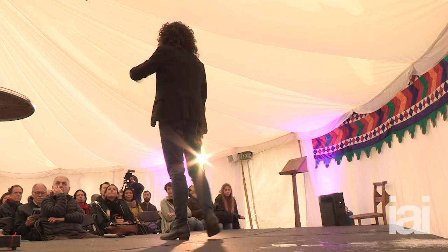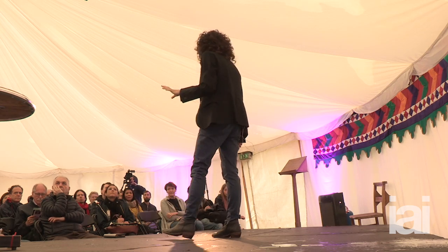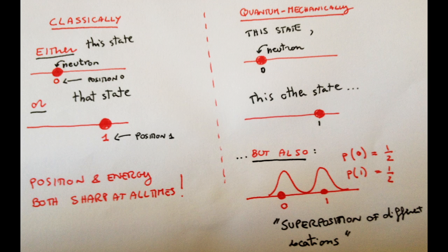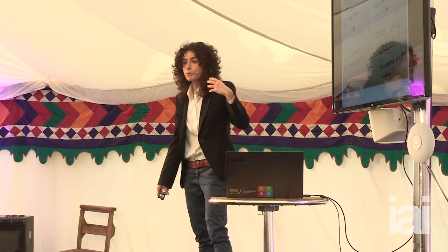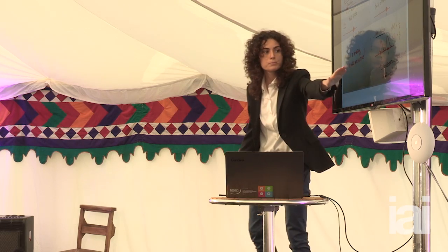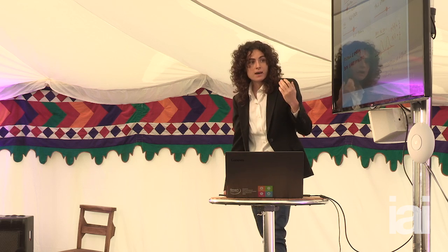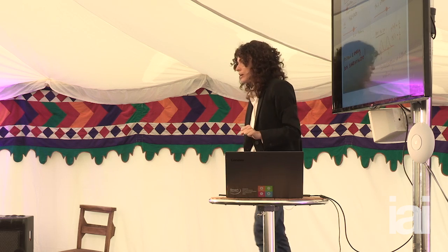Quantum mechanically, the picture is completely different. There is a state where the neutron is in position zero. There's a state where the neutron is in position one. But also, there is this particular state here, which I represent pictorially like that, where we can only predict the probability for the neutron to be in position zero or one, but the position is unsharp.